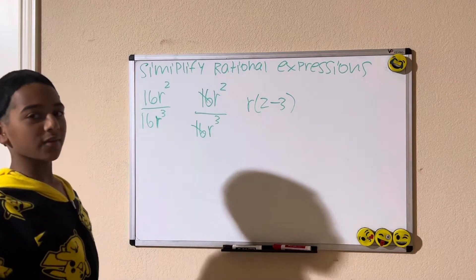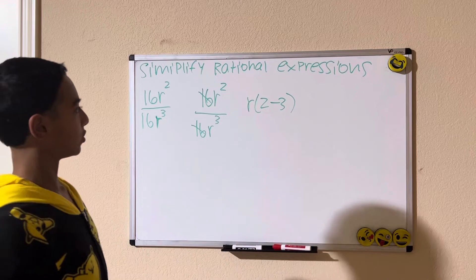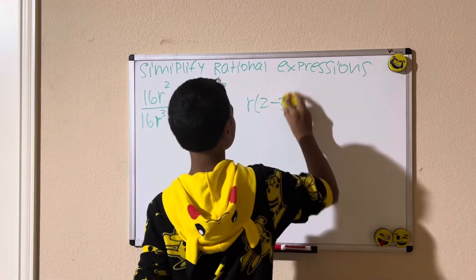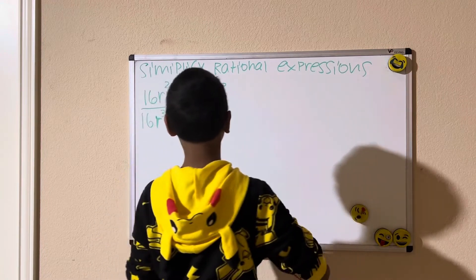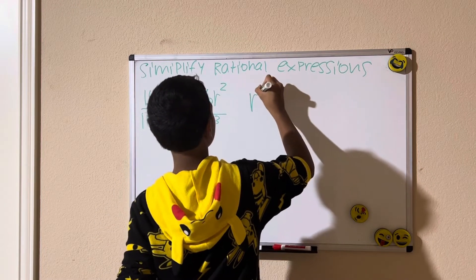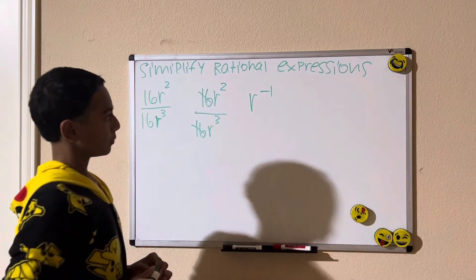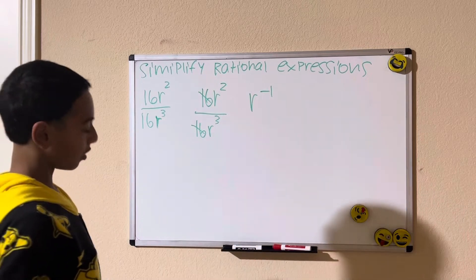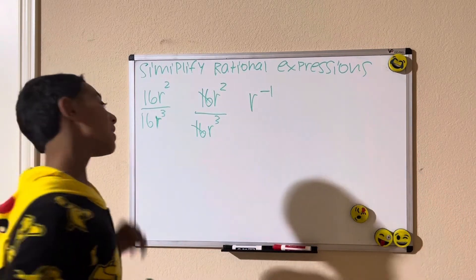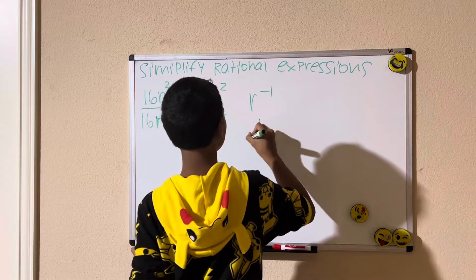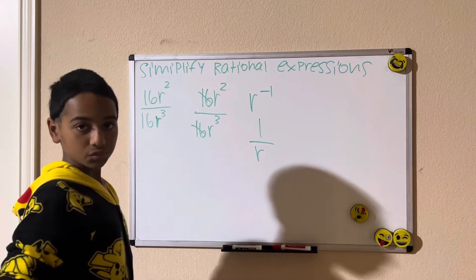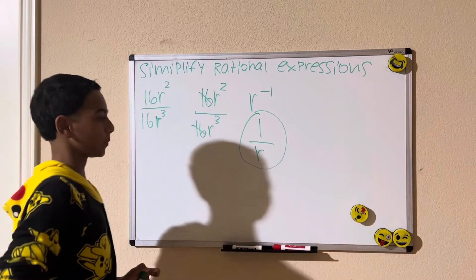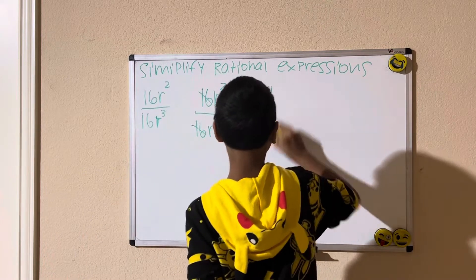See my properties of exponents video if you need clarification on dividing exponents. That gives r to the negative first power. But we only want positive exponents, so r to the negative first power is the same thing as 1 divided by r. And that is our solution for the first example.